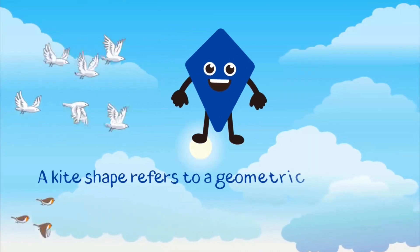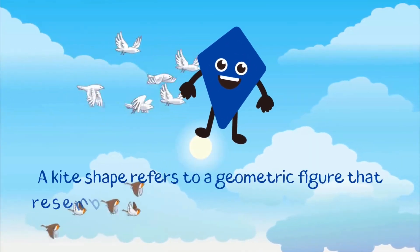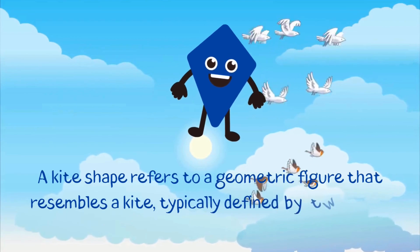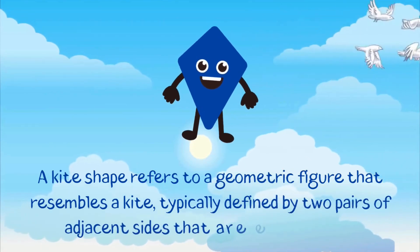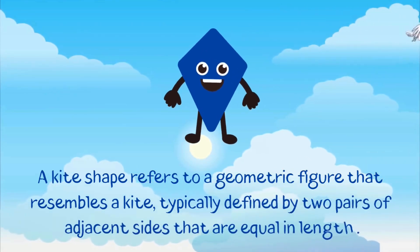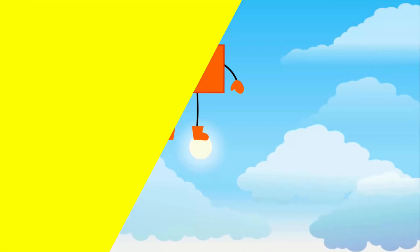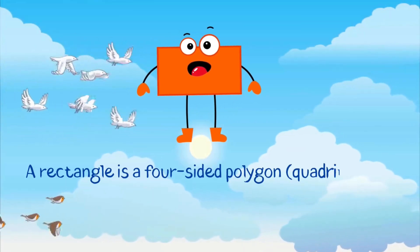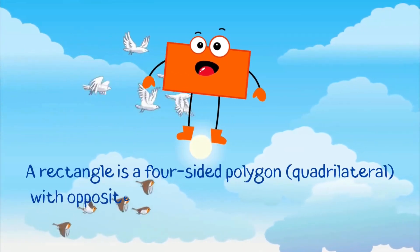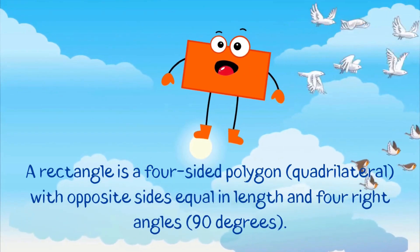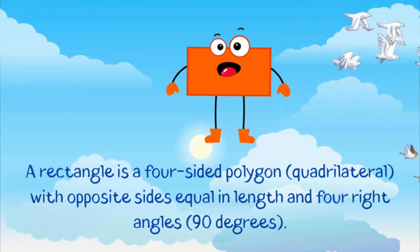A kite shape refers to a geometric figure that resembles a kite, typically defined by two pairs of adjacent sides that are equal in length. A rectangle is a four-sided polygon, or quadrilateral, with opposite sides equal in length and four right angles, 90 degrees.